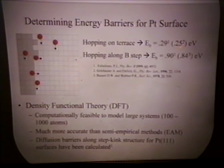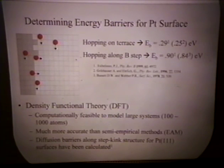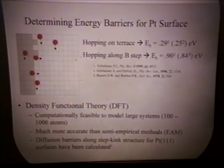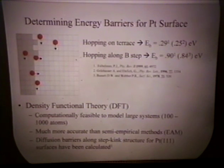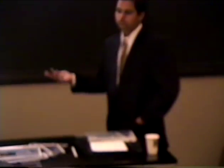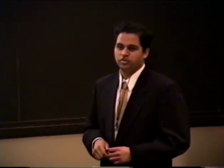To demonstrate this, I put up two energy barriers that can be compared with DFT and experimental results. These energy barriers are obtained experimentally by FIM experiments, shown in parentheses. The first is hopping on a terrace — DFT predicts 0.29 eV and experiment predicts 0.25 eV. Hopping along the steps — DFT predicts 0.9 eV and experiment predicts 0.84 eV. This shows that DFT gives accurate values for platinum surfaces, and these are much more accurate than other semi-empirical methods. We've been able to calculate 18 unique diffusion barriers along a step-kink structure on platinum 1-1-1.